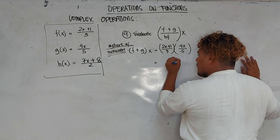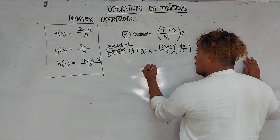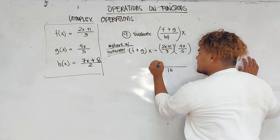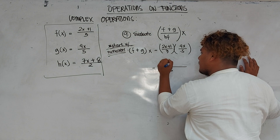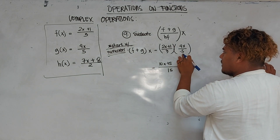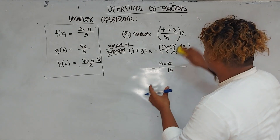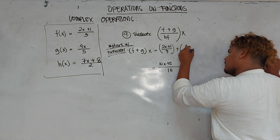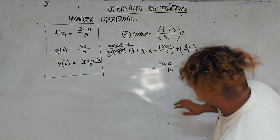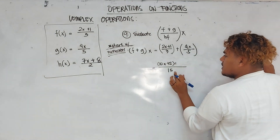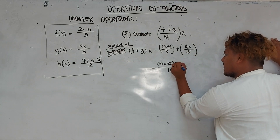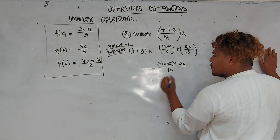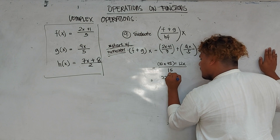So we have over 15. 15 divided by 3 is 5; 5 times 2x is 10x; 5 times 1 is 5. Plus, 15 divided by 5 is 3; 3 times 4x is 12x. Combining like terms: 10x plus 12x is 22x. So F plus G of x is now 22x plus 5 over 15. That is our numerator.